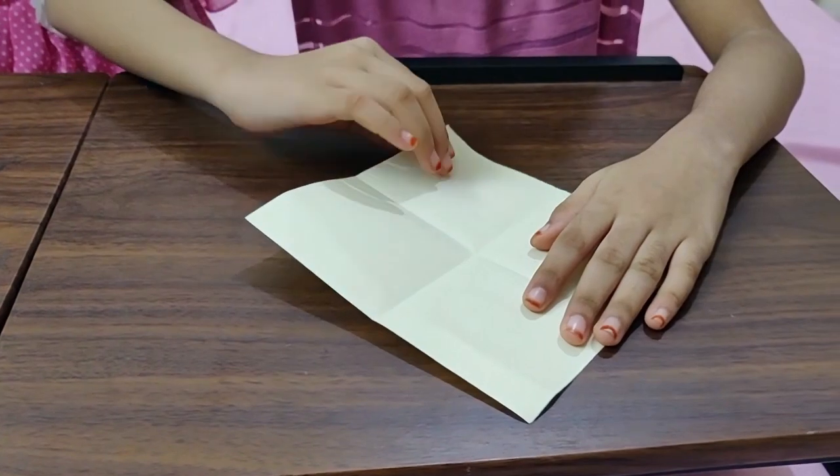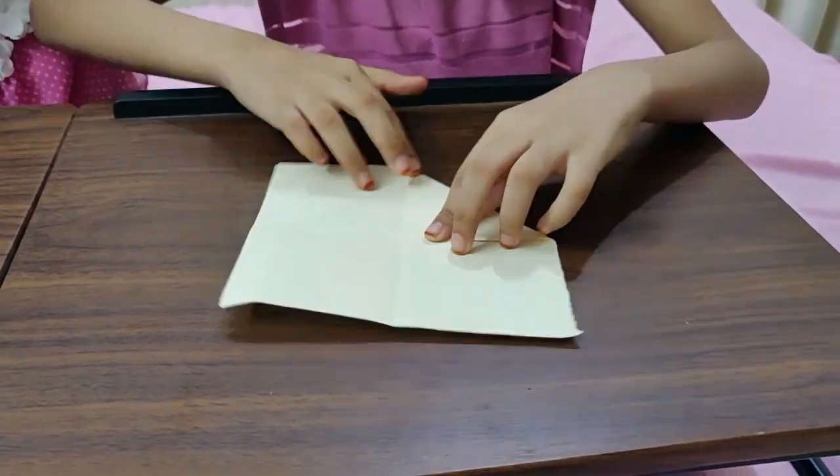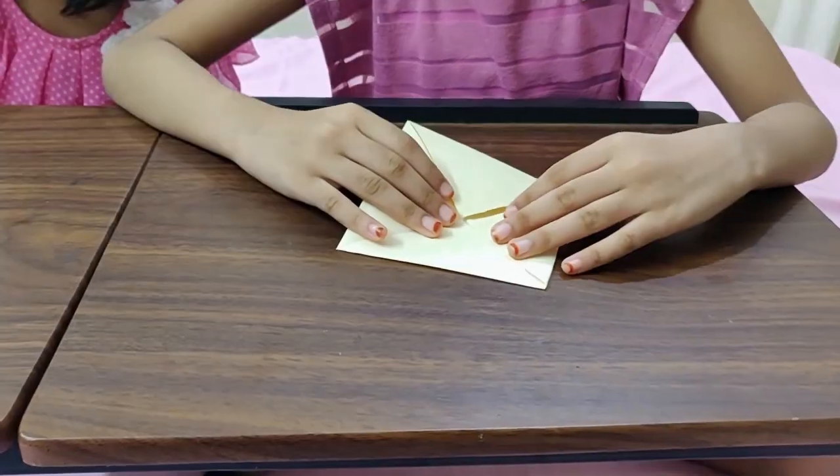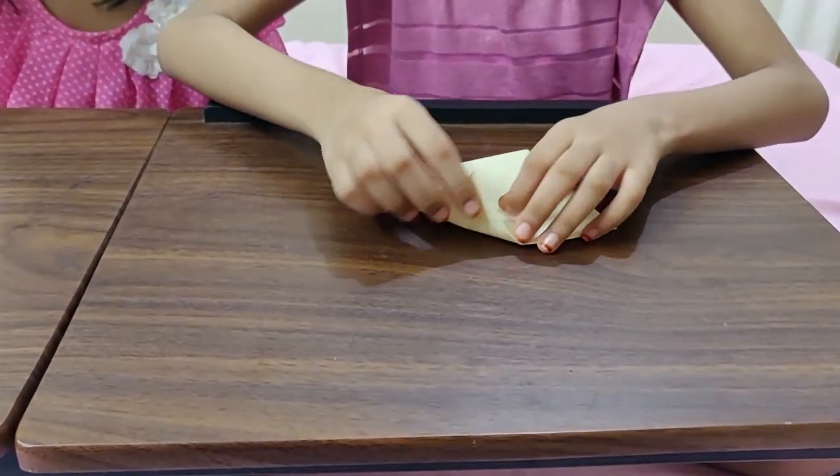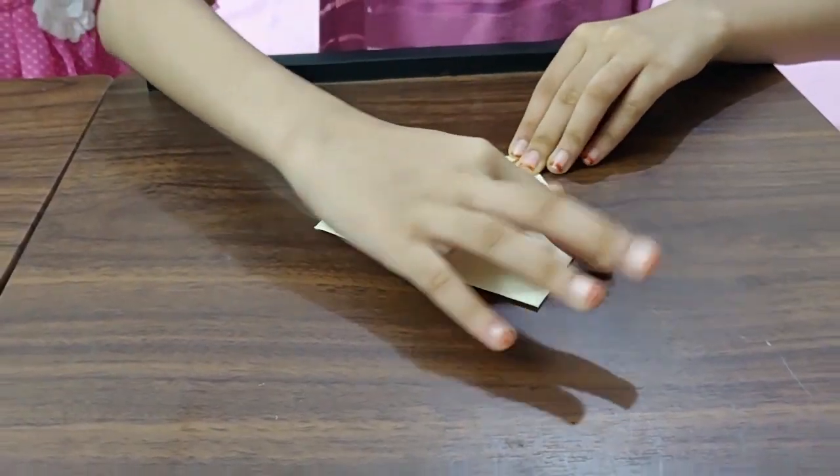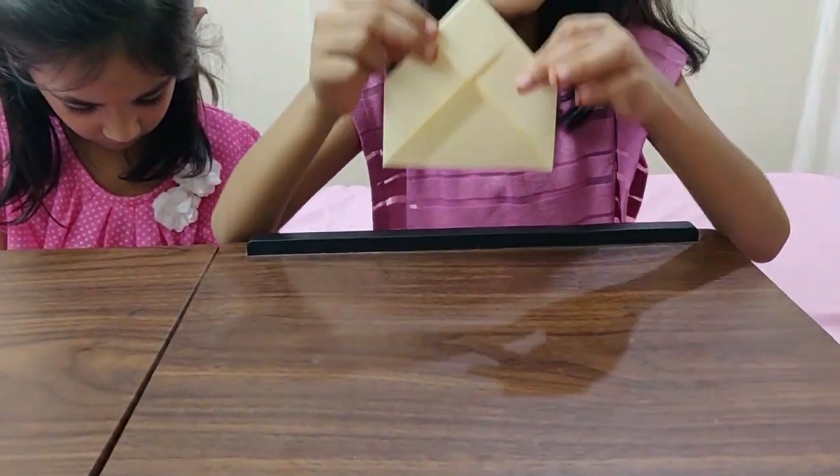Fold all the corners like this. Turn it back side and fold it like this. Then turn it. It becomes like this.